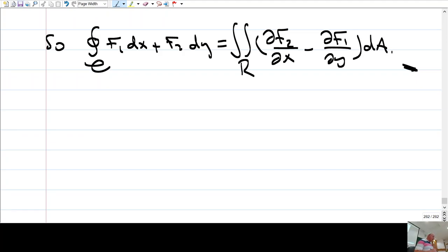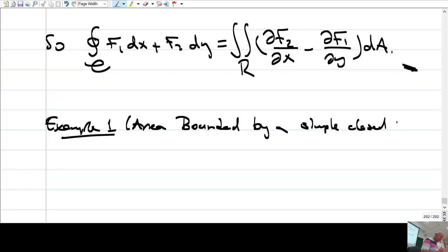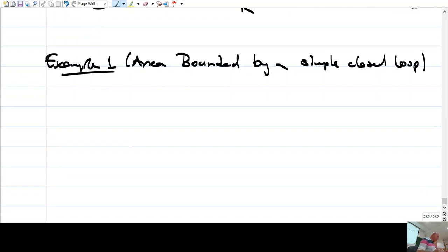Let's do several examples of how we use this theorem. Example one: Area bounded by a simple closed loop. So let f(x,y) be just this, so F1, F2, like this: minus y over 2 and then x over 2.